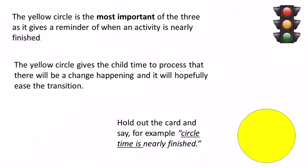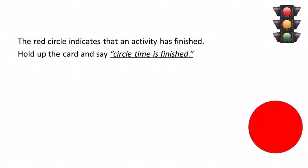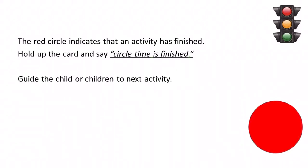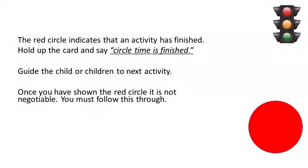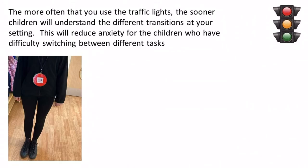Hold up the yellow card and say, for example, 'Circle time is nearly finished.' The red circle indicates that an activity has finished. Hold up the red card and say, for example, 'Circle time is finished.' Guide the child or children to the next activity. Once you have shown the red symbol, it is not negotiable — you must follow this through. The more often you use the traffic lights, the sooner children will understand the different transitions at your setting, causing less anxiety for children who have difficulty switching between tasks.